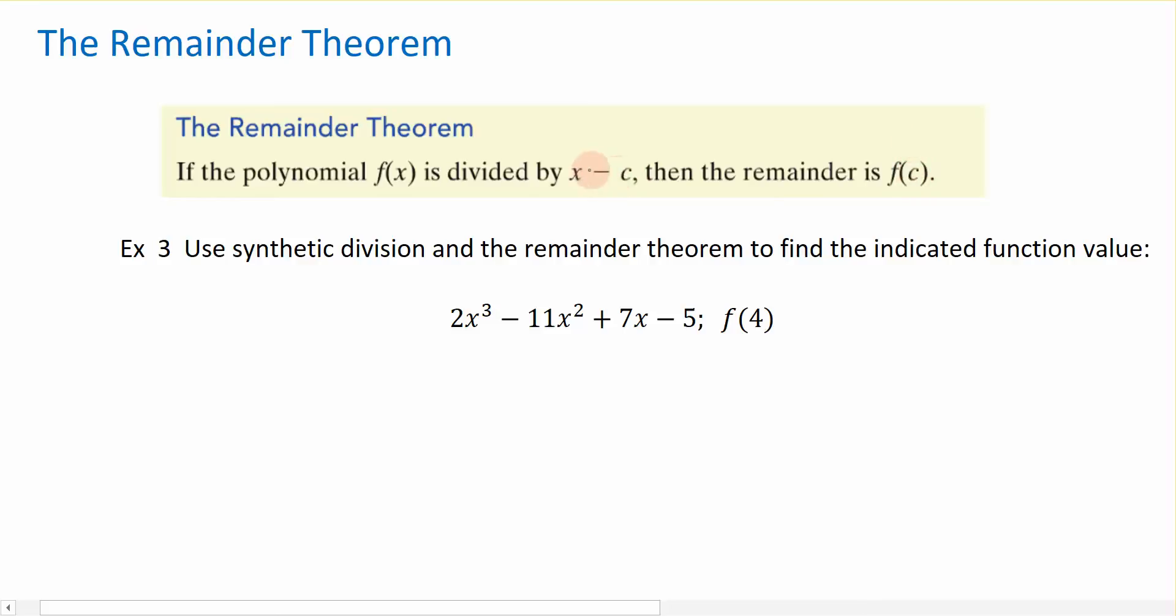So if I have a factor here, x minus c, and I basically plug in c into the function, then that gives me the function evaluated at c. Now what does that mean? Let me show you an example over here.